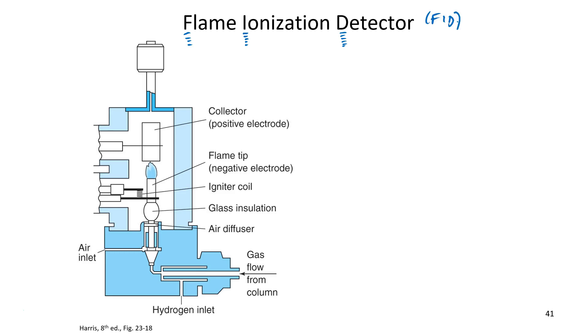Here is a nice diagram of the FID. Notice that you have gas flow from the column. And what does that encounter? Sure enough, it actually does encounter a flame. Notice that we're also using hydrogen as fuel for the flame.